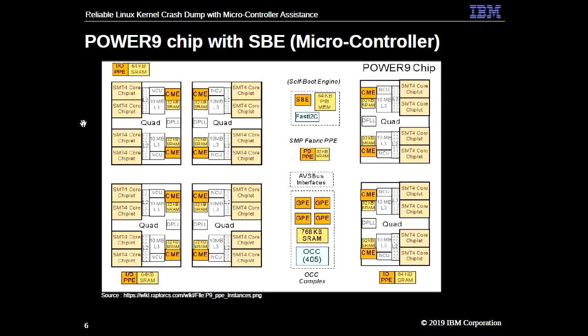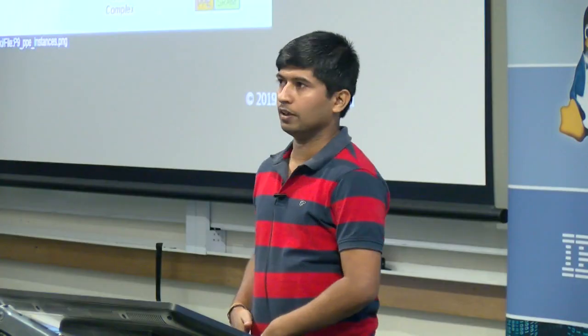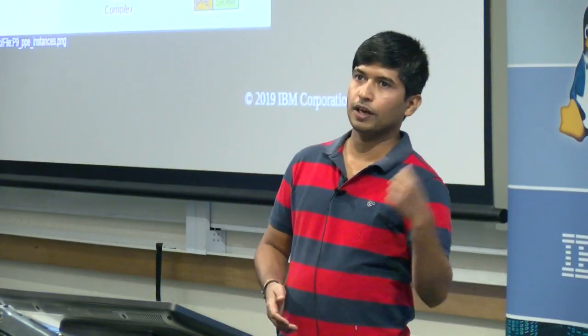Now I will introduce our Power9 processor along with the new microcontroller that helps us get the dumps. This is the Power9 chip - it has cores and other units. For the purpose of this talk, I want to focus on the middle column. The top one is the self-boot engine, a small microcontroller which we call in IBM the SBE engine - Self-Boot Engine - which helps us boot the Power system and also provides various services during runtime. One of those services is going to help us in capturing the dumps.